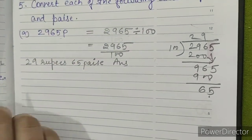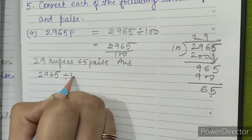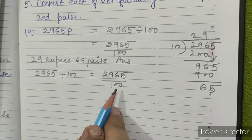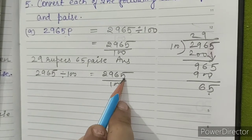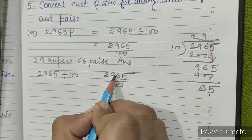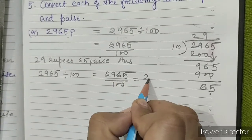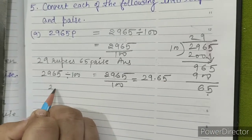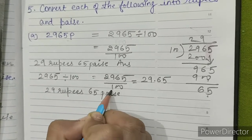We have one more method: 2965 ÷ 100. In 100, there are two zeros — count two places from the right-hand side and place the decimal between 9 and 6. So our answer is 29.65, which is 29 rupees and 65 paise.